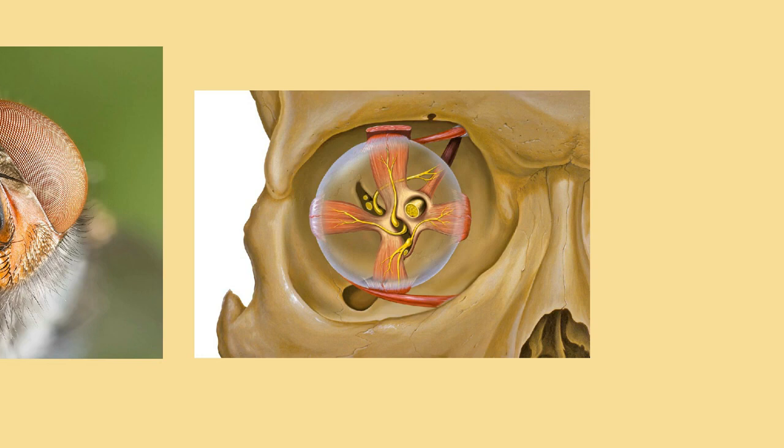This can only be countered by increasing lens size and number. To see with a resolution comparable to our eyes, humans would require very large compound eyes, around 11 meters (36 feet) in radius. Compound eyes fall into two groups: apposition eyes, which form multiple inverted images, and superposition eyes, which form a single erect image. Compound eyes are common in arthropods and annelids, and some bivalved mollusks. Compound eyes in arthropods grow at their margins by the addition of new ommatidia.